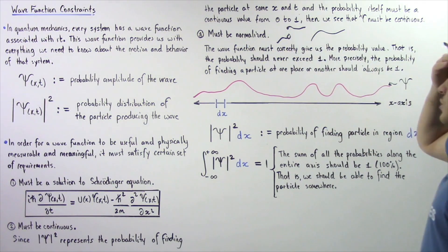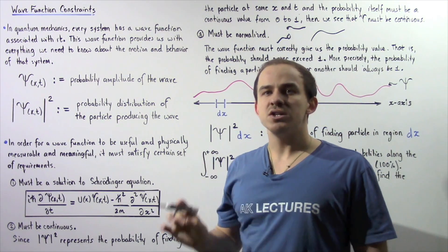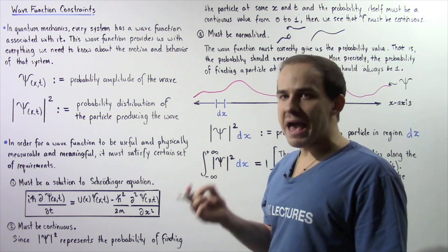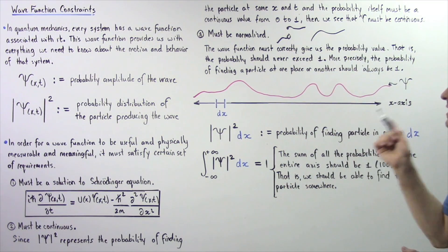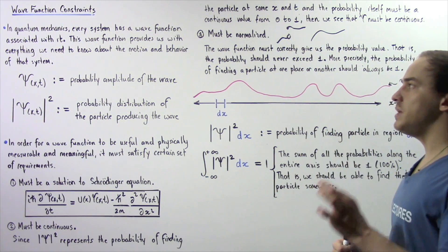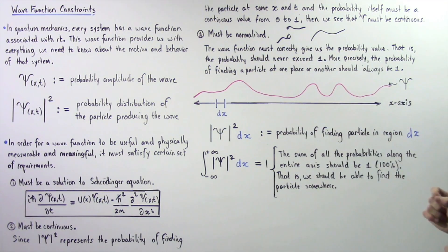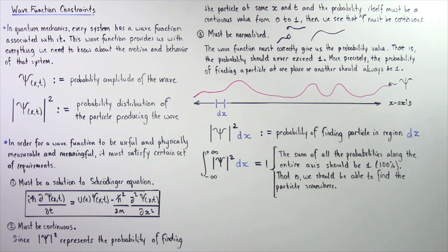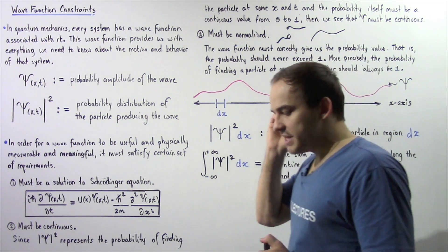The final requirement states that the wave function must be normalized. Normalization is a term from mathematics, statistics, and probability. The wave function must correctly give us the probability value — the probability should never exceed 1 and should never be negative. More precisely, the probability of finding a particle at any one location or another should always sum to 1.